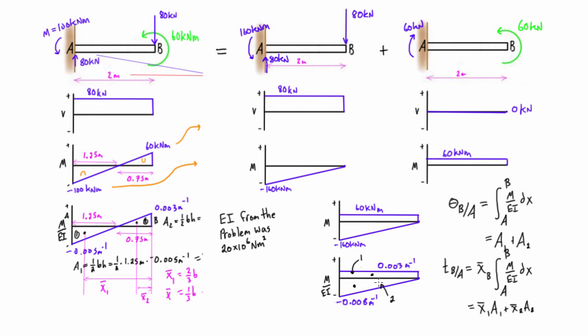When you do it this way, it's called doing the moment area method by parts. If you're asked to do it by parts, this is the method you do. You split it out using the method of superposition with each force or applied moment, and you should be ending up with the same answer.